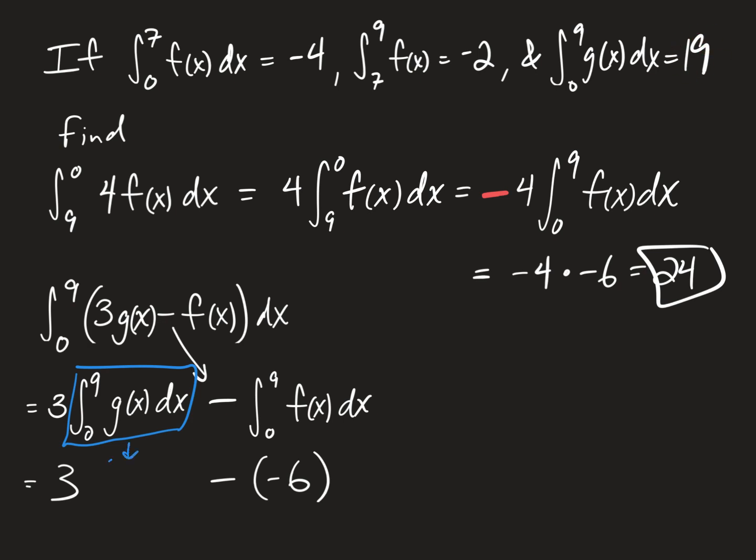And then just simply figure this out. Three times 19 is 57. 57 plus six is 63.